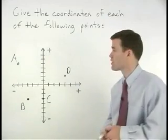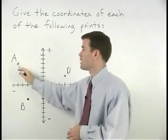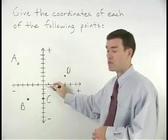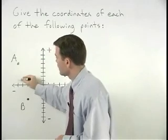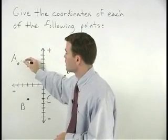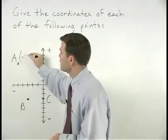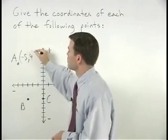So to find the coordinates for point A, we start at the origin and we move 5 units to the left and 4 units up. So that's the point negative 5, 4.